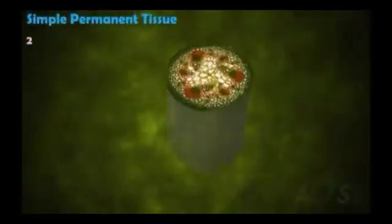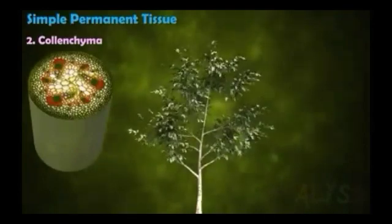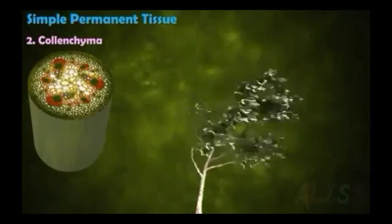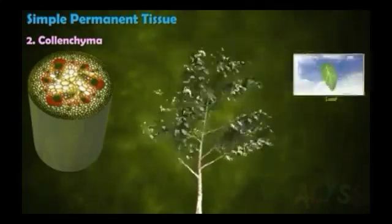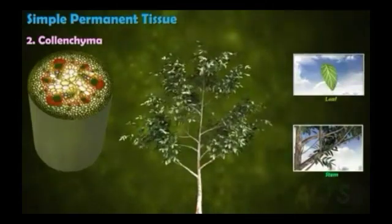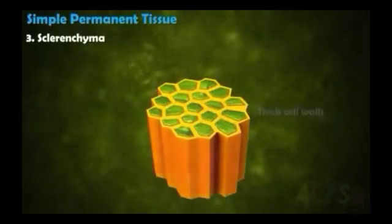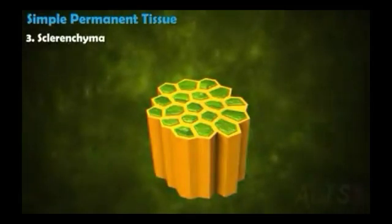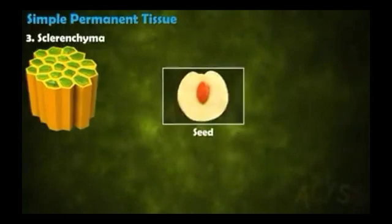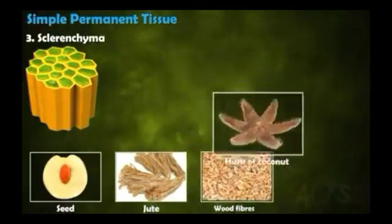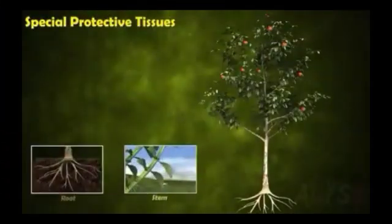Colenchyma is generally found below the epidermis. It gives flexibility and structural support to plants — during heavy breezes a plant bends but will not break because of the flexibility given by colenchyma. Colenchyma is also found in the petioles of leaves. Sclerenchyma consists of dead cells with thick depositions due to lignin, whereas depositions in colenchyma involve cellulose and pectin. Sclerenchyma includes fibers — seen in coconut husk and jute — as well as sclereids, seen in seeds.